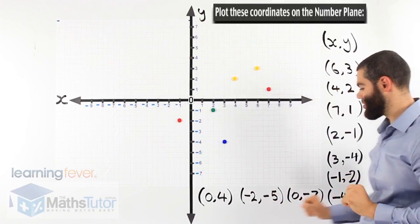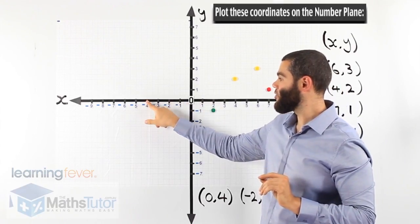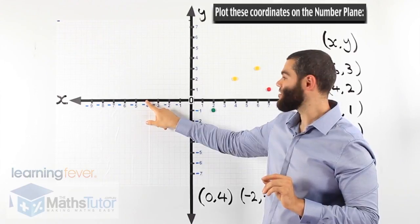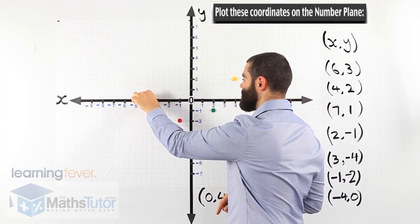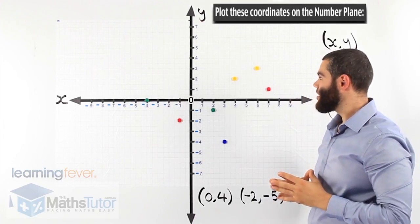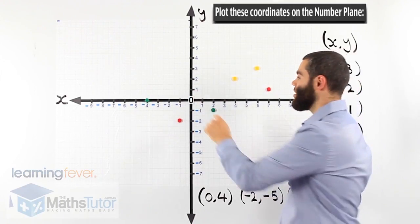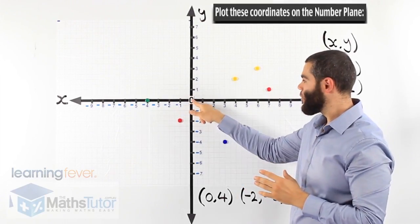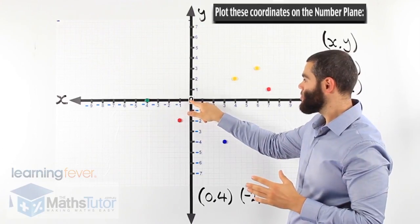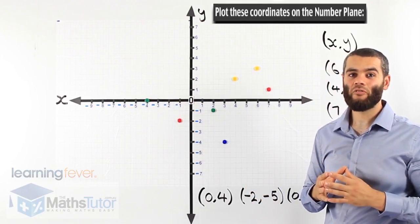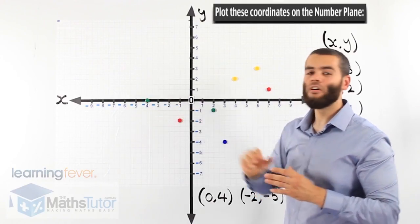Then we have (-4, 0). Negative 4 on the x-axis — there it is. And 0 on the y-axis — now 0 on the y-axis is basically on the actual line, so it stays right there. The point in the center is actually (0, 0) — we call it the origin. So minus 4, 0: minus 4 on the x, and 0 — it doesn't go up or down, it just stays on the line.